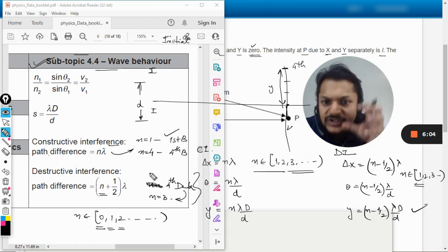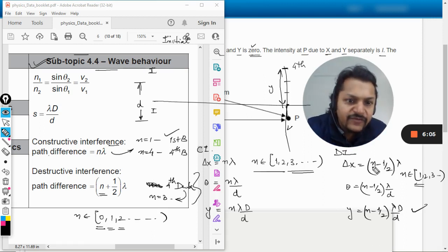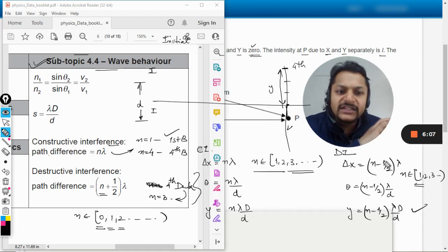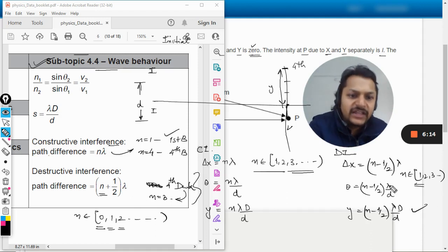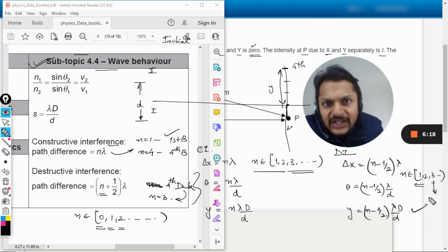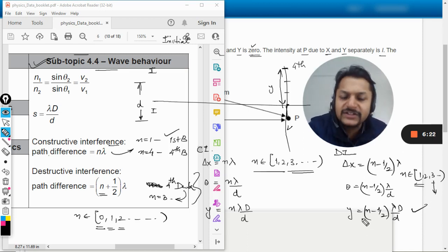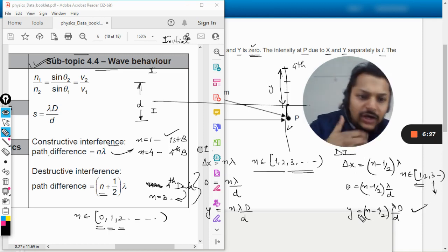Obviously majority of students would have a problem with this. They will get confused. To remove the discrepancy what I have done is I have changed the formula. This is also the odd multiple of λ by 2. The only thing is that here, if you want to find the third dark, n will be equal to 3. So that is why we can move according to this formula.